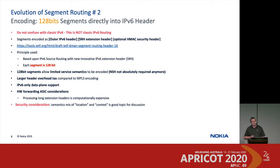Nobody likes to pay tax. If you use SRv6 with IPv6 you're going to be paying more overhead tax for your packets than you would using 32-bit SIDs. You would like to reduce the amount of tax, and that's a consideration you have to make.